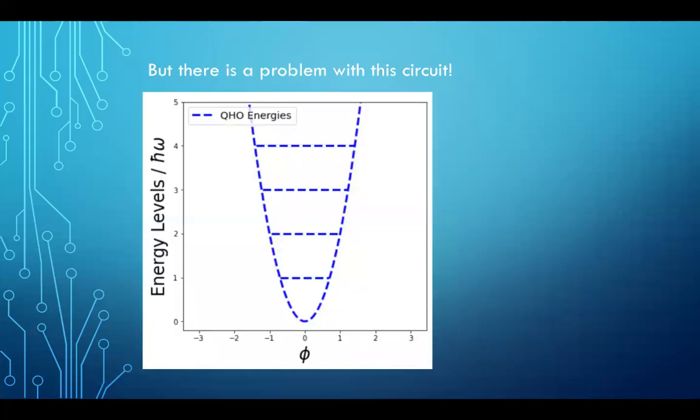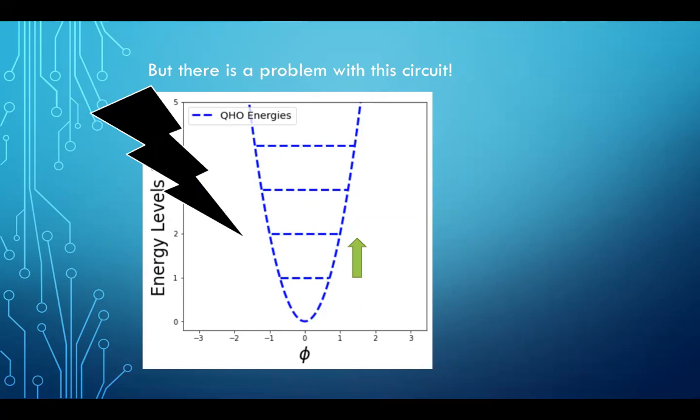But there's a problem. If we do the quantum mechanical analysis of this circuit and solve the Schrödinger equation for this circuit, we find that the energy levels for this oscillator, they are all equally spaced out. All those horizontal lines in this picture correspond to the possible energy levels. They're all equally spaced out. What does this mean? This means when we shine light on it, it can excite this circuit from the ground state to the first excited state. But there's nothing stopping it from getting further excited to the next level, because it just requires the same amount of energy to jump to the second level, and indeed the third level, and fourth level, and so on.